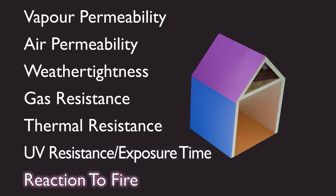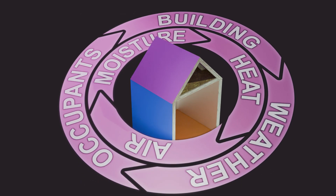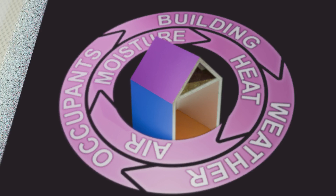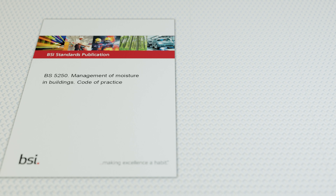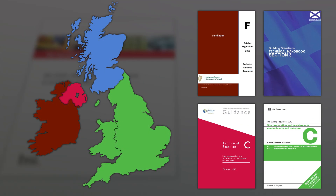How moisture is managed in buildings and how these properties affect the performance of the building envelope is detailed in the British standard document BS 5250, the code of practice for the management of moisture in buildings. Introduced in the 1970s, initially as the code of practice for control of condensation, BS 5250 has grown into a comprehensive guide to controlling the movement and effects of moisture in buildings. BS 5250 is referenced in the building regulations across the UK and the Republic of Ireland as the primary source of guidance for managing all types of building moisture.